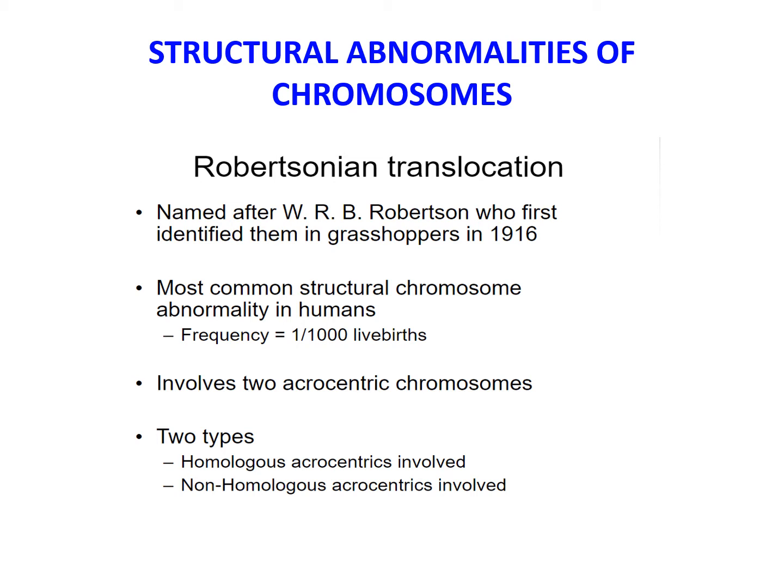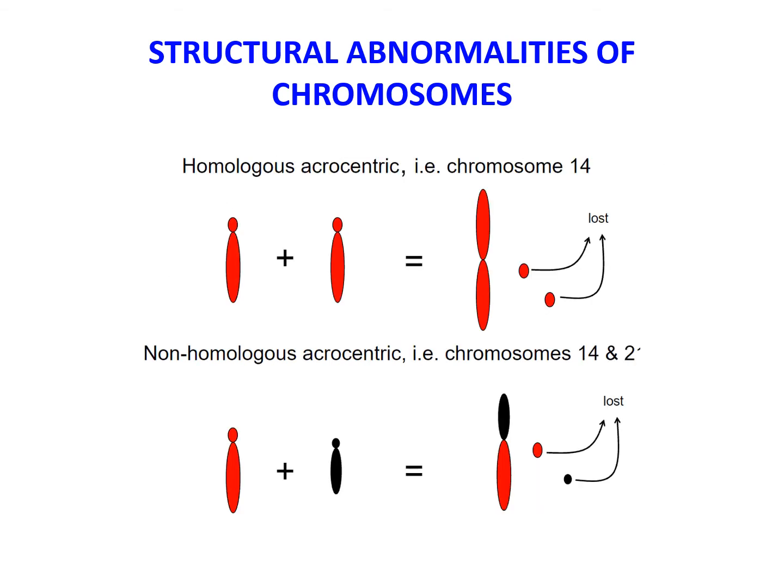In Robertsonian translocation, the breaks typically occur close to the centromeres of each chromosome. Transfer of the segments leads to one very large chromosome and one extremely small one. Usually the small product is lost; however, because it carries only highly redundant genes like ribosomal RNA genes, this loss is compatible with a normal phenotype. This illustrates the difference between homologous acrocentric and non-homologous acrocentric translocations.